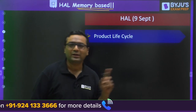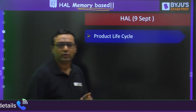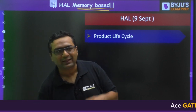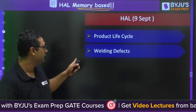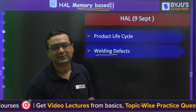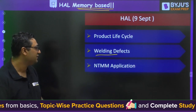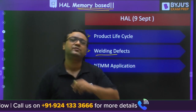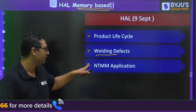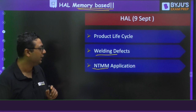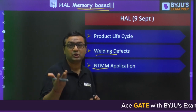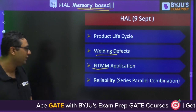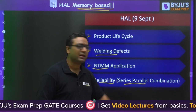For today's exam, product life cycle was a topic from industrial engineering — the question asked in which stage the product goes through the major competition. They also asked about welding defects, including hot tears. Questions were there from non-traditional machining methods (NTMM) — for example, if a component is electrically conductive, which process would be suitable. Nearly three to four questions were from NTMM. They also asked about vibration in the USM process, and there was a question on reliability involving series-parallel combination from industrial engineering.